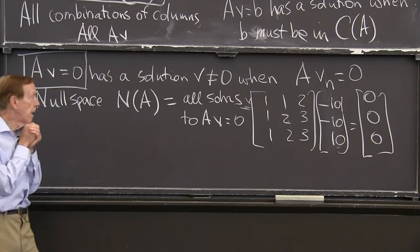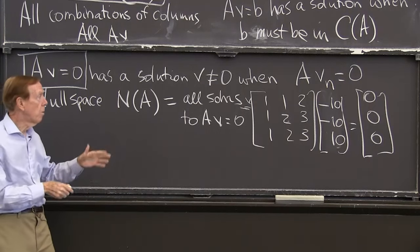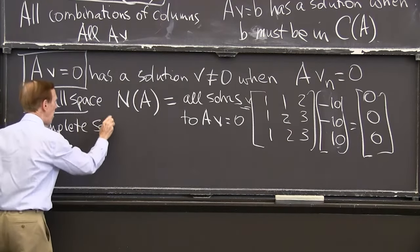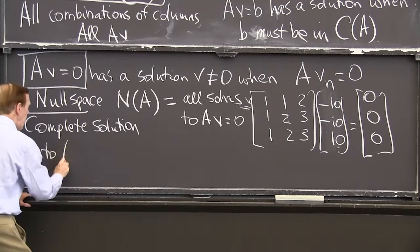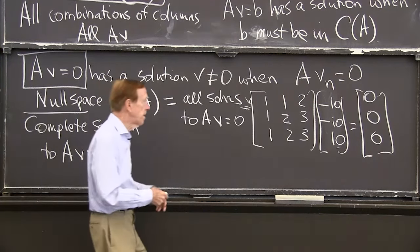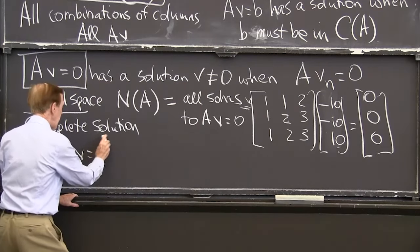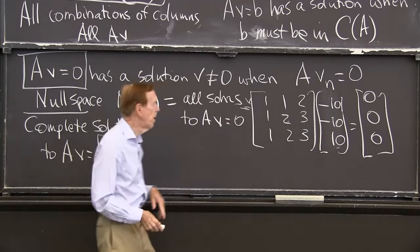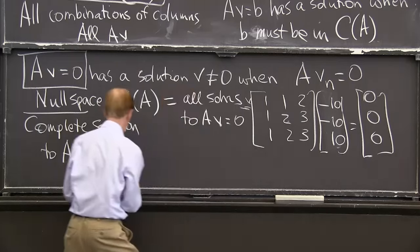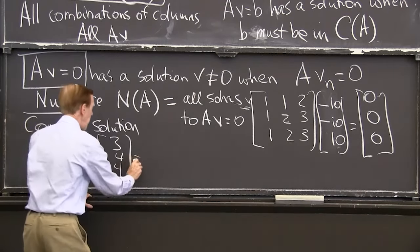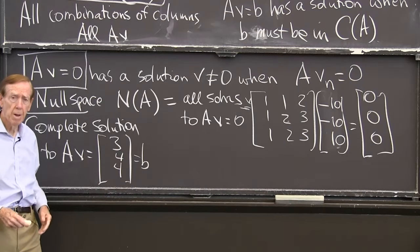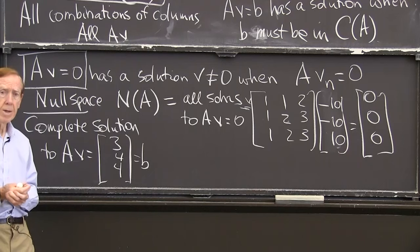That's a little going in. Now, I ask, what are all solutions? The complete solution to A, V equals. Well, let me choose some right-hand side where there is a solution. Let me choose a right-hand side. Say if I add that column and that column, I'll get A, V. Maybe I'll take two of that column plus one of that column. Two of the first column with one of the second would be three. Two plus that would be a four. Two plus that would be another four. That's my B. It's a combination of columns. You saw me create it from the first two columns.